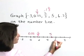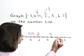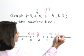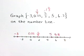That's going to be three-tenths of the way between six and seven, so right about here for 6.3. So we've graphed these numbers on the number line.